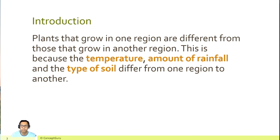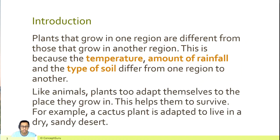Plants that grow in one region are different from those that grow in another region. This is because the temperature, amount of rainfall, and the type of soil differ from one region to another. Like animals, plants too adapt themselves to the place they grow in. This helps them to survive. For example, a cactus plant is adapted to live in a dry, sandy desert.